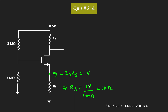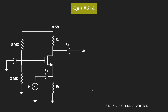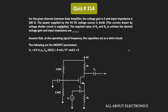So using DC analysis, we again confirm RS = 1 kΩ. In summary, for the given amplifier to achieve a voltage gain of 5 and an input impedance of 200 Ω, the required values are RD = 1.25 kΩ and RS = 1 kΩ.